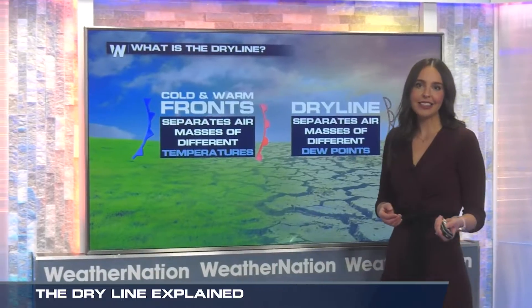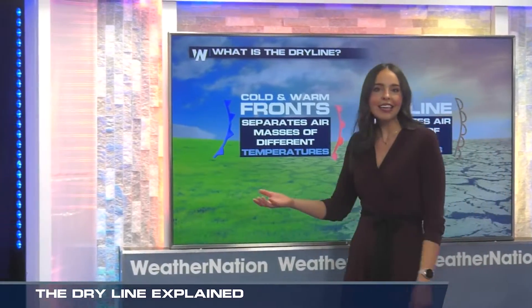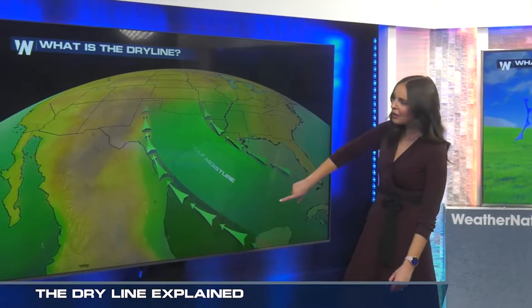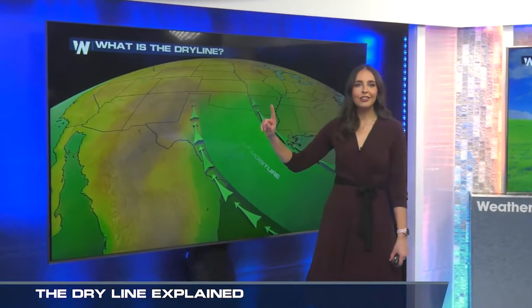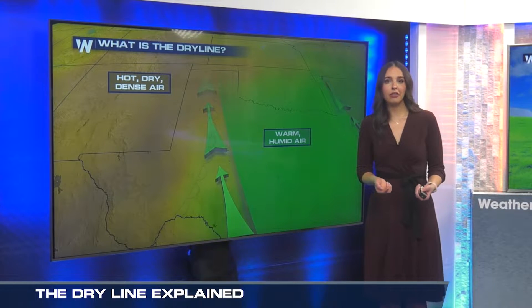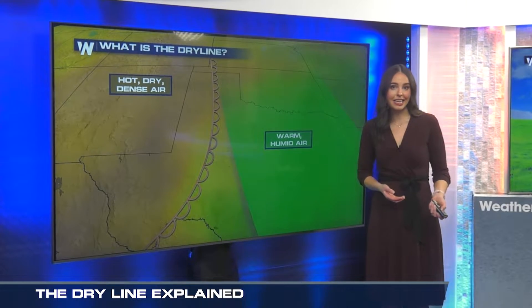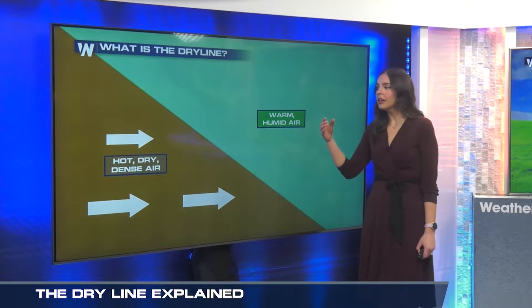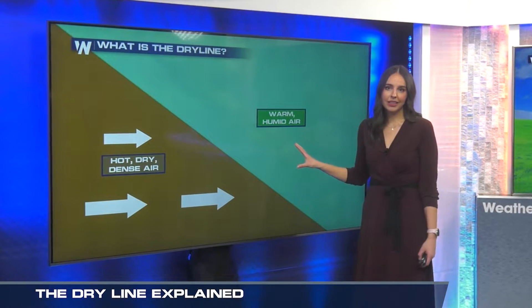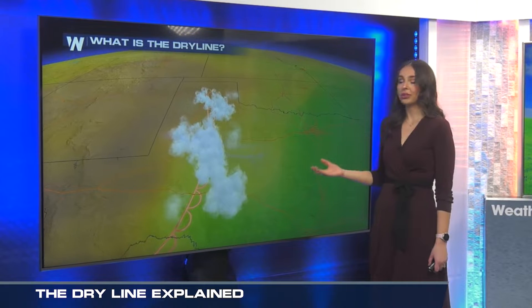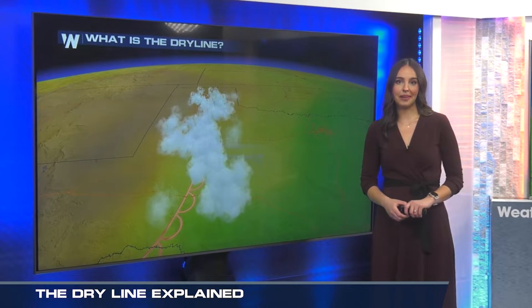In the United States, the dry line separates warm and humid air from the Gulf of Mexico from hot and dry air from the deserts of the southwest. The dry air behind the boundary actually has a higher density than the moist air ahead of it. The collision of these two air masses forces the air to rise, which results in thunderstorm development.